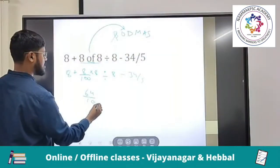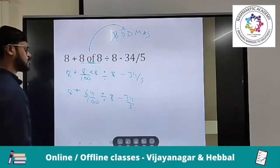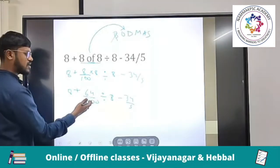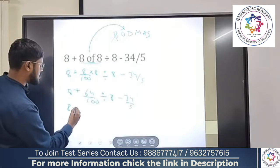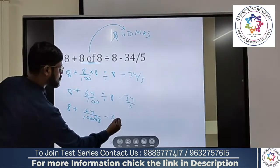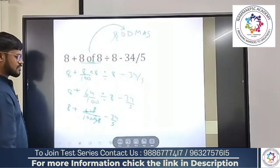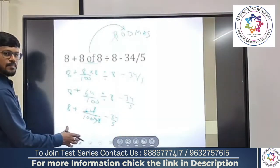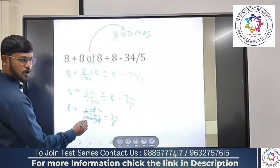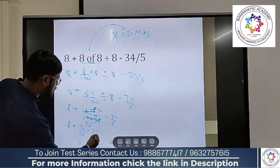8 into 8 is what? 64 by 100 divided by 8 minus 34 by 5. Here again, this whole term, let us keep it in fraction only rather than make it into 0.64. What can we do here? 64 divided by 8, right? 8 plus 64 by 100 divided by 8 minus 34 by 5. In this particular part, I can cancel this. 8 into 8. Should we simplify this particular part? Can we simplify this? Dividing by 2 or 4 for that matter? 4 into 2 is 8. 4 into how many times? 25 times. 8 plus 2 by 25 minus 34 by 5.